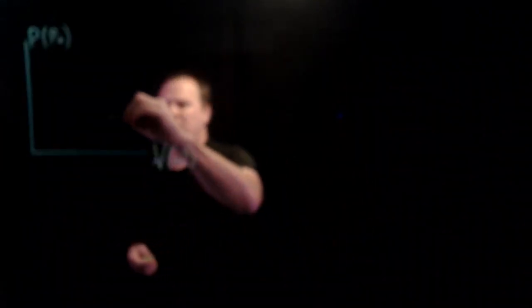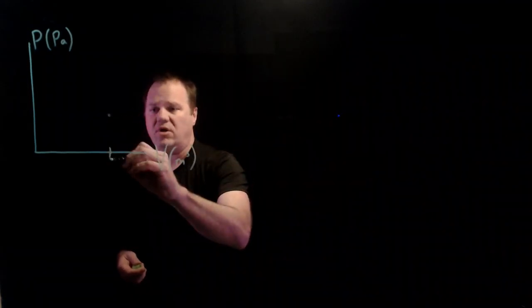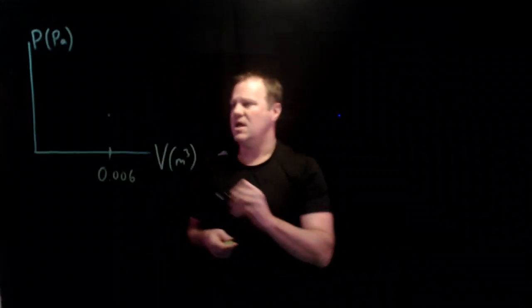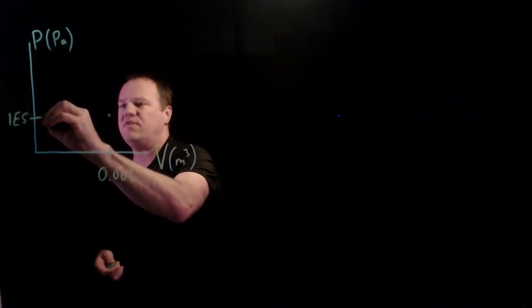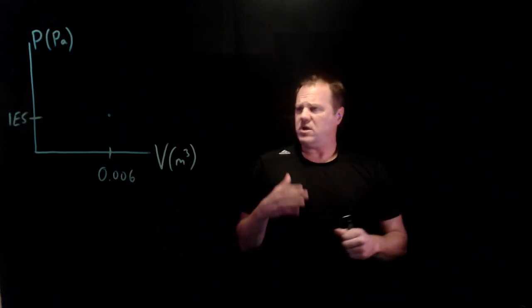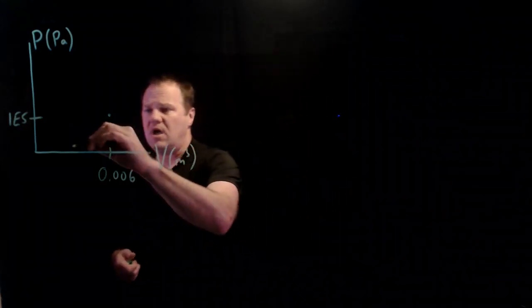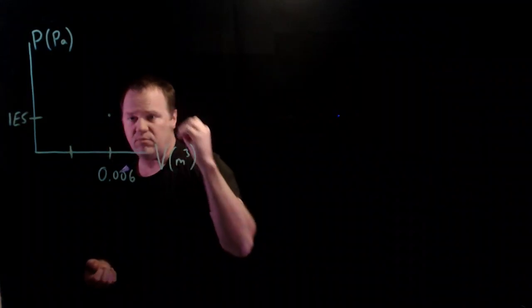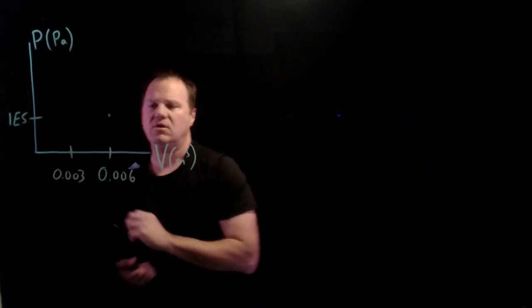Let's just say that our isothermal process starts with a volume of 0.006 cubic meters and a pressure of 1 times 10 to the 5th pascals. That's about an atmosphere. We're going to compress this gas isothermally to half its volume. We're not going to talk about the details of how that happens, but let's say that we compress the gas down to 0.003 cubic meters.